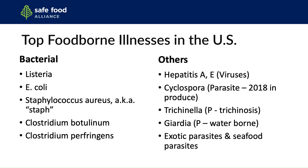Some other organisms of concern include bacterial diseases such as Listeria, E. coli, Staphylococcus aureus or Staph, Clostridium botulinum — the causative agent of botulism — and Clostridium perfringens. We also have other types of organisms of concern that are non-bacterial, such as Hepatitis A, Cyclospora which is a parasite — there was a recent illness outbreak related to fresh produce with Cyclospora — Trichinella or Trichinosis, which is a type of parasitic worm, Giardia which can be waterborne, as well as various exotic parasites and seafood parasites that we may encounter.